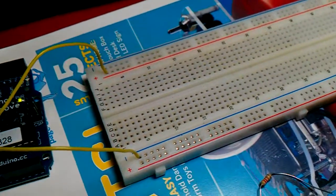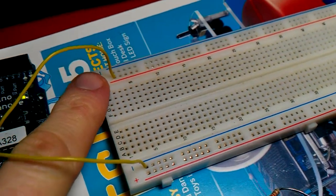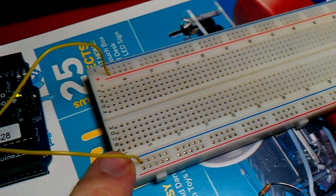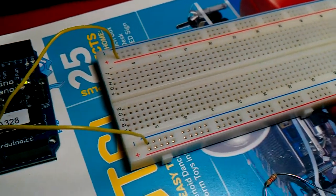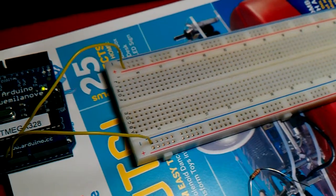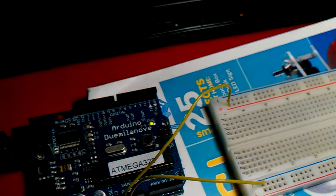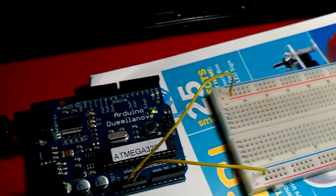I like to do my breadboarding like this where I go from positive on the top to ground on the bottom. I just think it's a simple way of doing breadboarding. It keeps things from being messy. You always know which direction the current is flowing. I'm going to show you a really simple circuit.